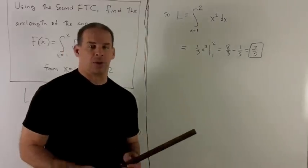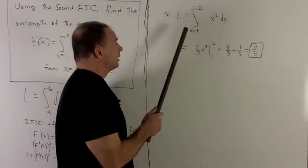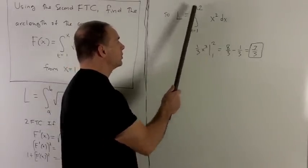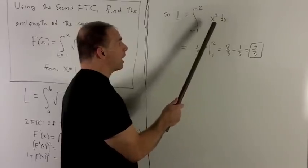Now let's go to the arc length formula. For our example, we're looking at arc length equals integral from 1 to 2 of our arc length gadget, which we crush down to x squared, dx.